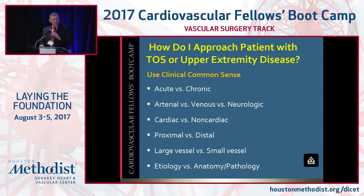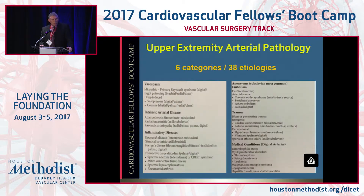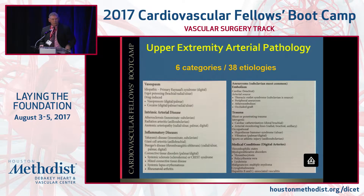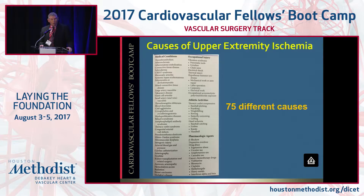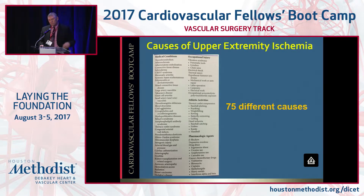You have to use good clinical common sense because there are lots of etiologies, lots of categories. This comes from Rutherford. There are six categories and 38 etiologies for upper extremity arterial pathology. And you're in clinic, and there's no textbook. Or you can base it on causes of ischemia, which there are 75 different causes. So upper extremity ischemia is really a mixed bag, and you sort of have to prioritize how you actually look at this and evaluate it.